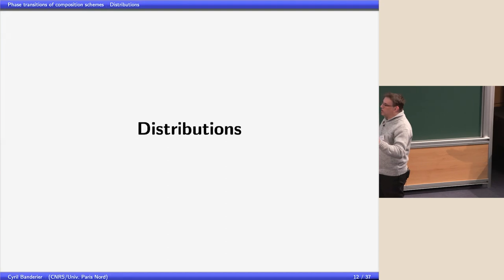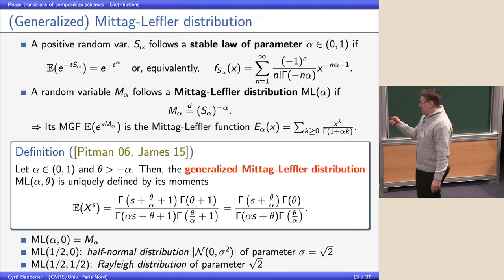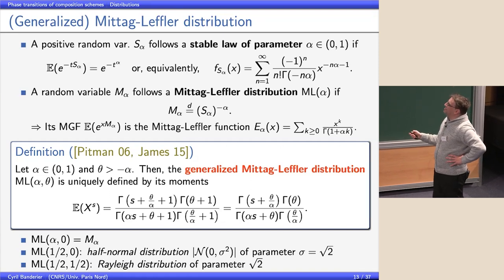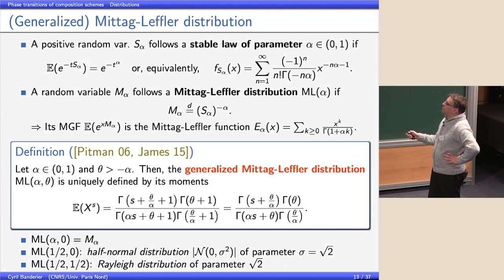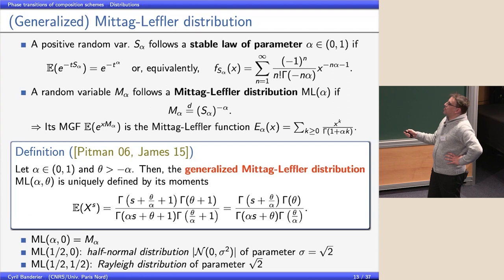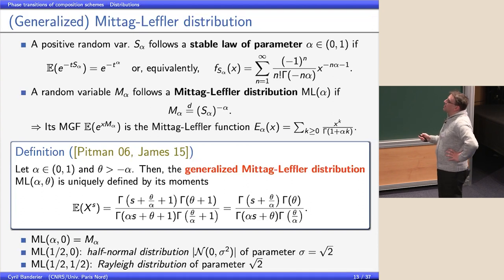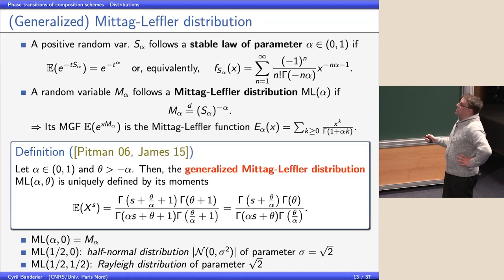Let me explain the limit distributions. Something well known is the stable law with parameter alpha. In combinatorics you can focus on just this main parameter alpha. A random variable follows a stable law with parameter alpha if the generating function of its moments is given by a specific function — or equivalently its density has a certain expression. Here one uses the convention that 1/(+∞) = 0 and 1/0 for negative values of gamma gives 1/∞.